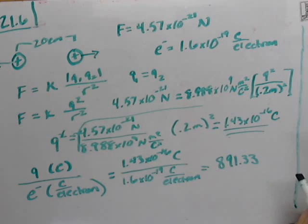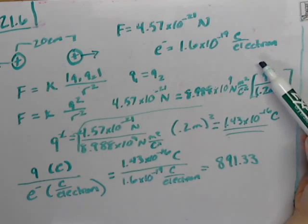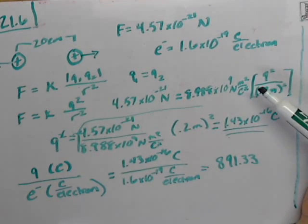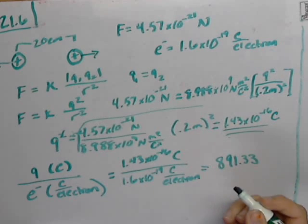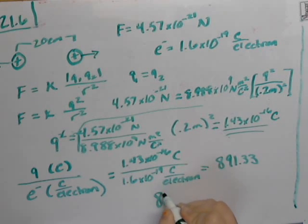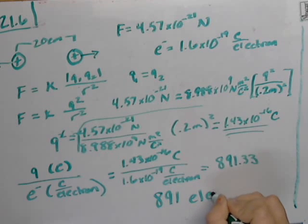Now, we can't put this 0.33 since electrons are quantized. That means they're whole numbers. You can't have part of an electron. So we're going to go ahead and round it down to 891 electrons.